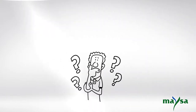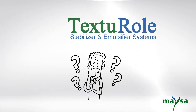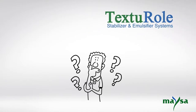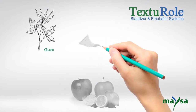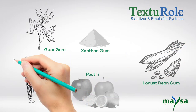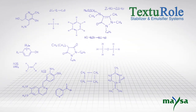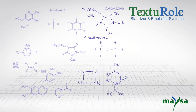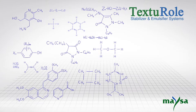What are textural stabilizer and emulsifier systems? They are mainly blends of hydrocolloids and emulsifiers that provide functional solutions for dairy and food applications. The raw materials used in the manufacture are carefully selected, collected, and formulated to create more suitable blends for various applications.